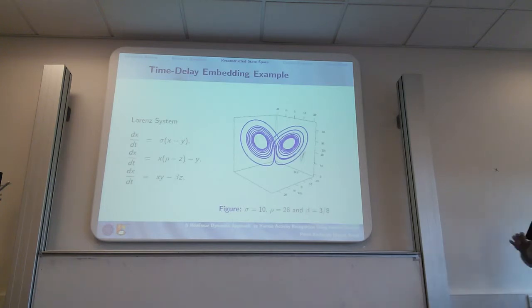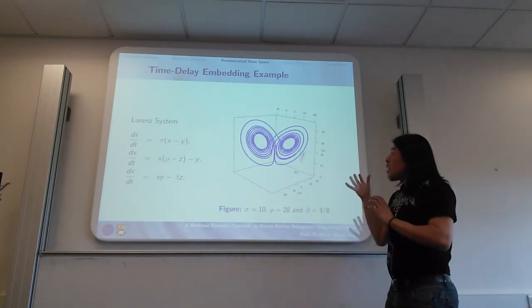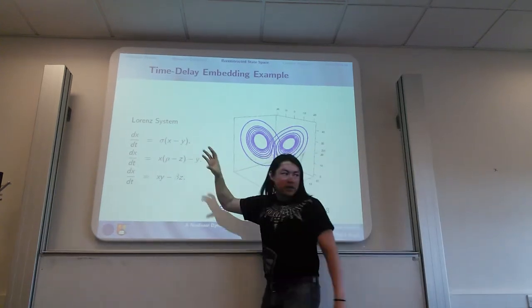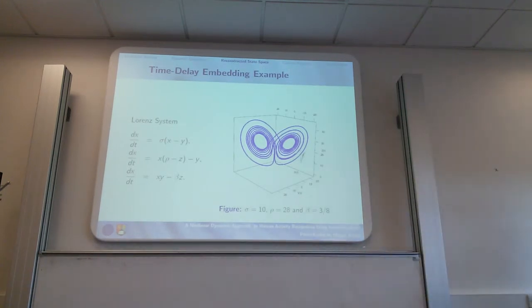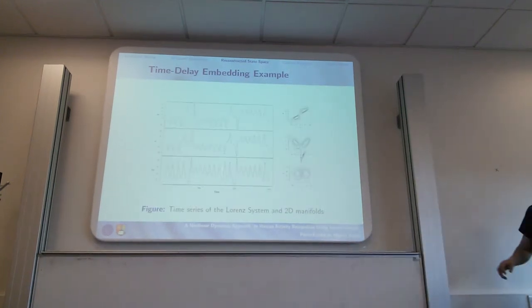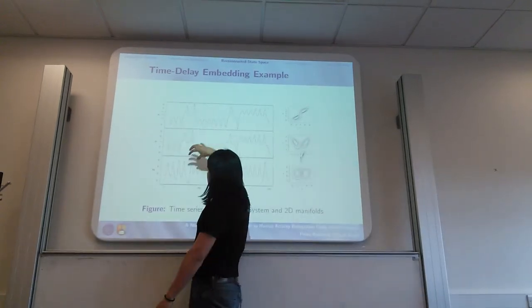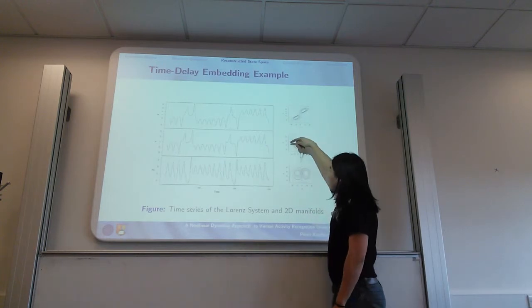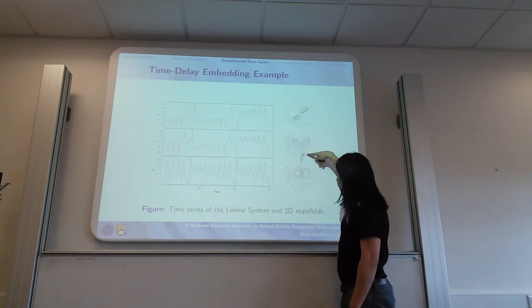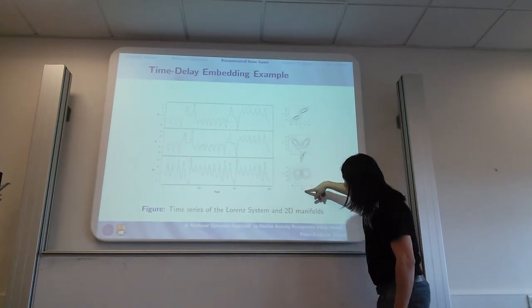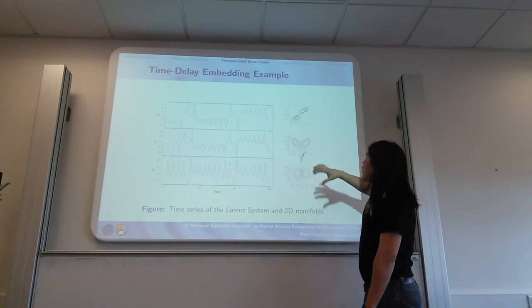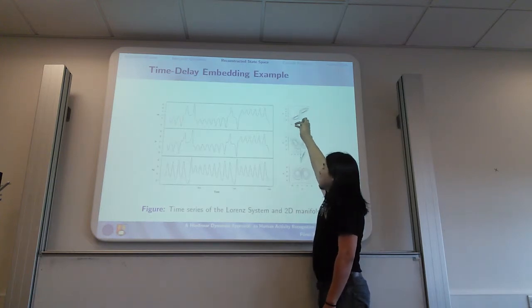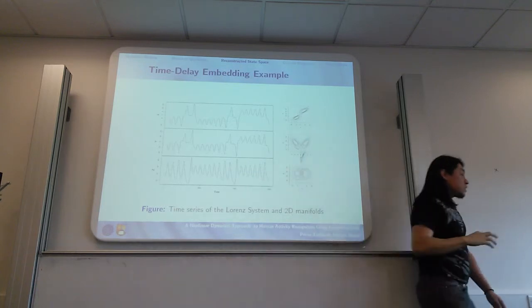In order that you understand better what I'm doing, this is a Lorenz system which is a three differential system. Once I solve it, I have these three time series: x, y, and zeta. Then I plot x and y in the state space, and zeta and x, and z and y. As you can see, this is what we call a manifold in the two-dimensional state space.